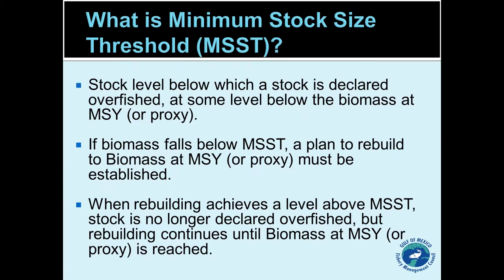That threshold can be almost anything — it can be at the MSY level or can be as low as one-half of the MSY level. The MSST is normally set somewhere below the MSY level to allow for fluctuations, but if the stock drops below that threshold, NMFS will send the council a letter saying the stock has been declared overfished. That triggers a requirement for the council to put a rebuilding plan in effect.